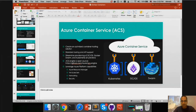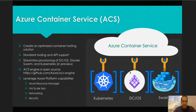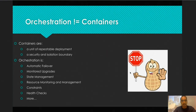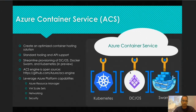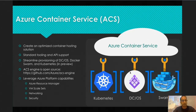The idea here is that you have options for which particular platform you want to run. Right now we are supporting Kubernetes, DCOS, and swarm, which is pretty much the top three in the market. If there are new arrivals that are well-received in the market, the chances are they will end up in the ACS service. It's customer-driven — if the customers are using a particular service, then there's a good use case for it to be here.